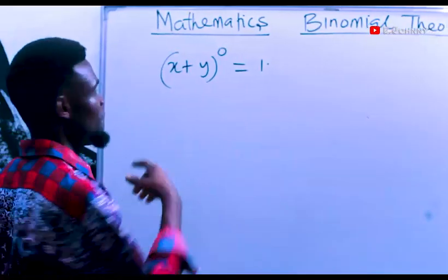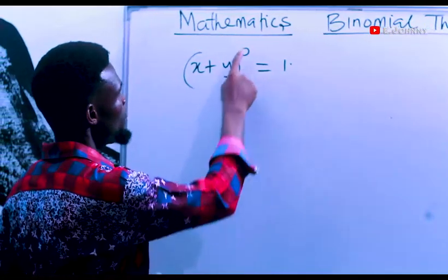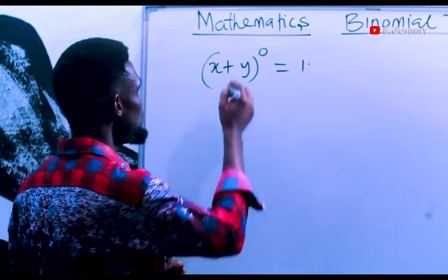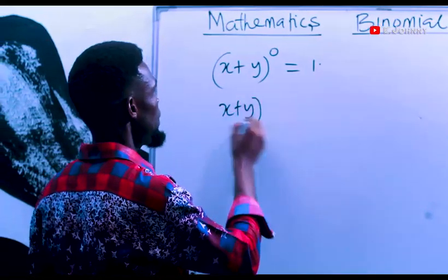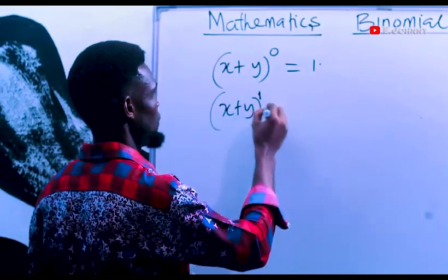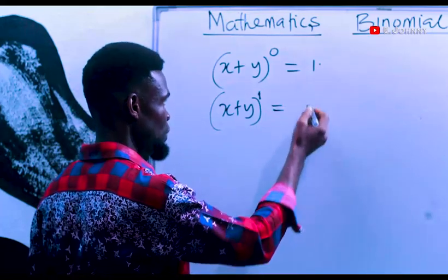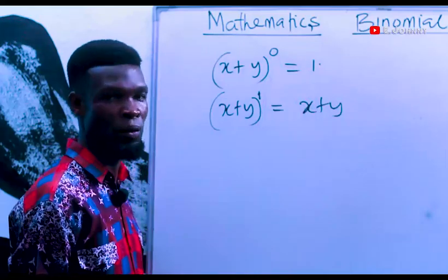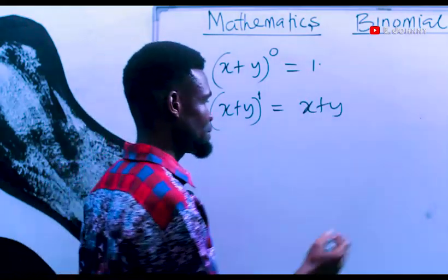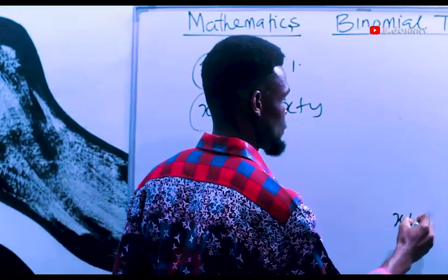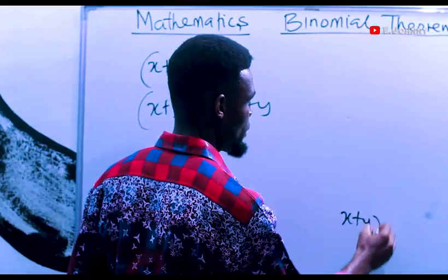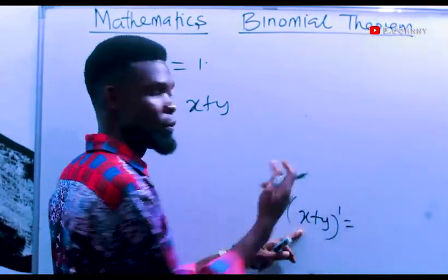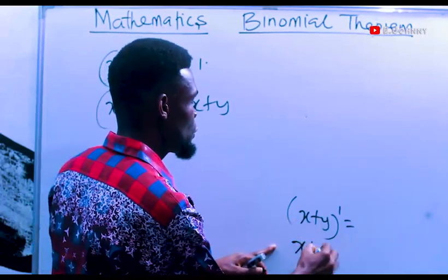Now, in the same way x plus y raised to power zero equals one, if I have x plus y raised to power one, the answer must be the same thing as x plus y. For instance, x plus y raised to power one means x plus y into one place.